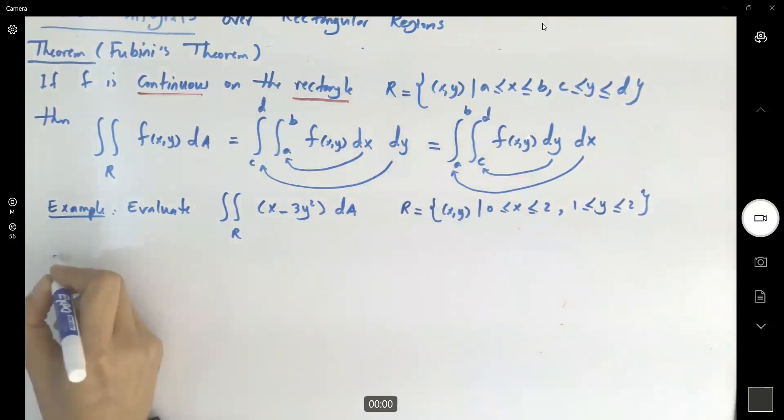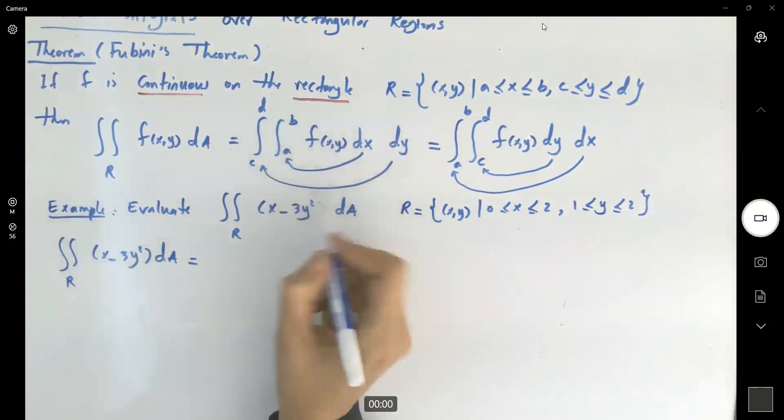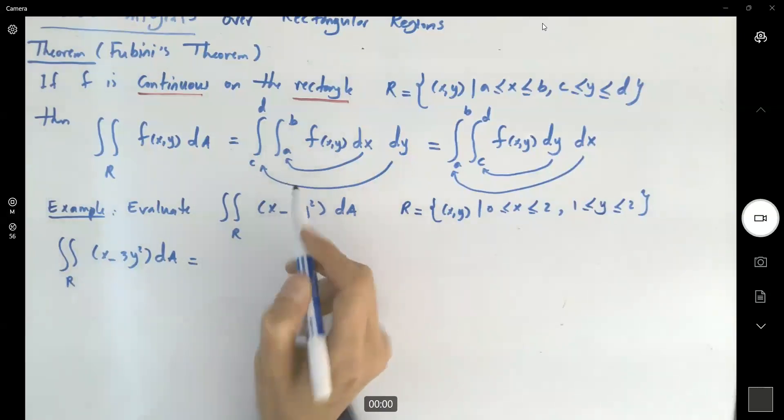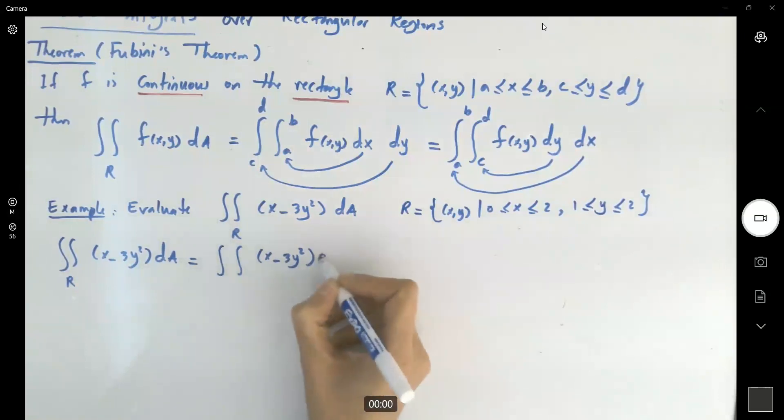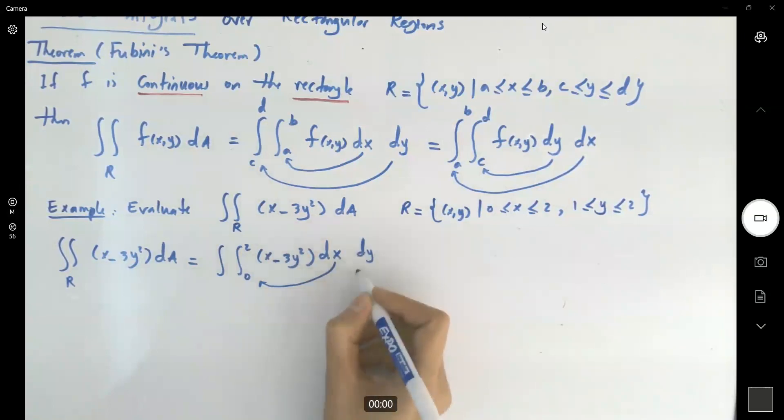The double integral over R of x - 3y² dA is, let us apply the very first method. Let us calculate the inner integral with respect to x. It's going to be written this way: we have the integral of the function x - 3y² dx. My x is in between 0 and 2. It ranges between 0 and 2. Then, I'm going to take the integral with respect to y, while y ranges between 1 and 2.